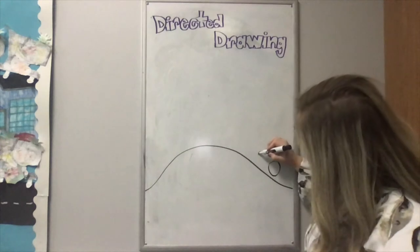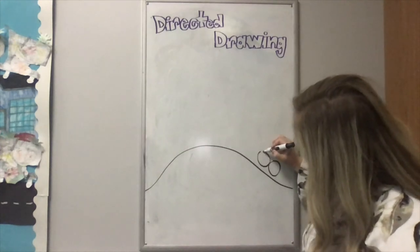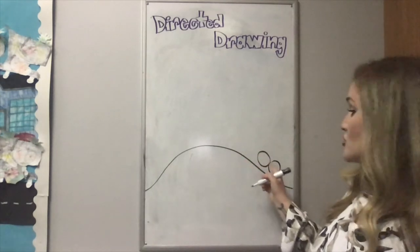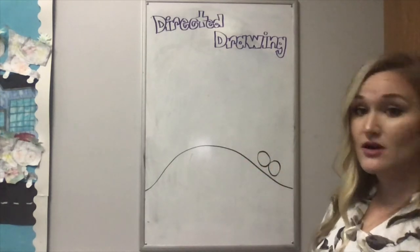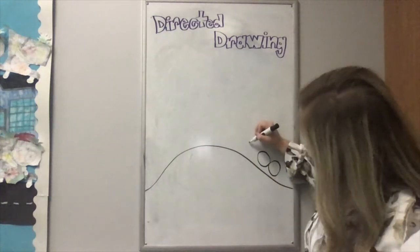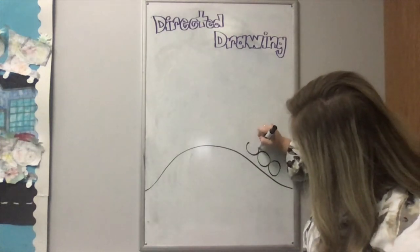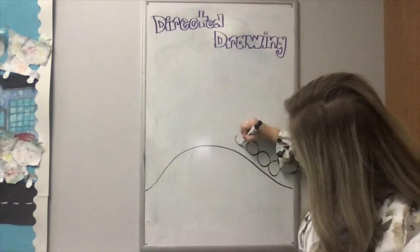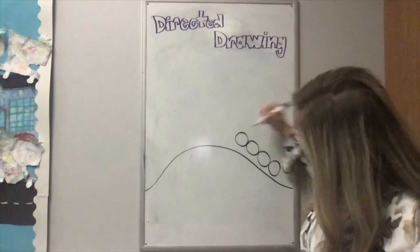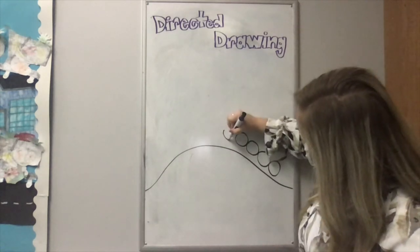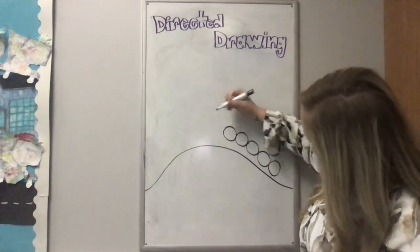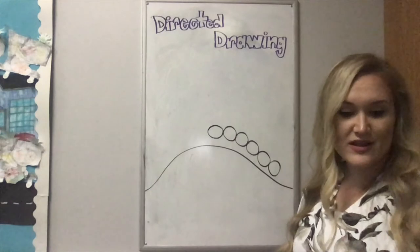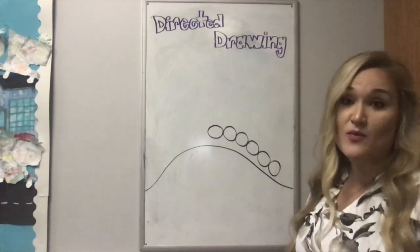We're going to do the next one. Now, keep in mind that the caterpillar's body has to connect, so you have to draw the circle so it's touching the other one. So we have one, two, three. We're going to follow the path of the hill. Nice. Let's keep going. We'll add two more. Does that look like a caterpillar? Well, not quite yet.